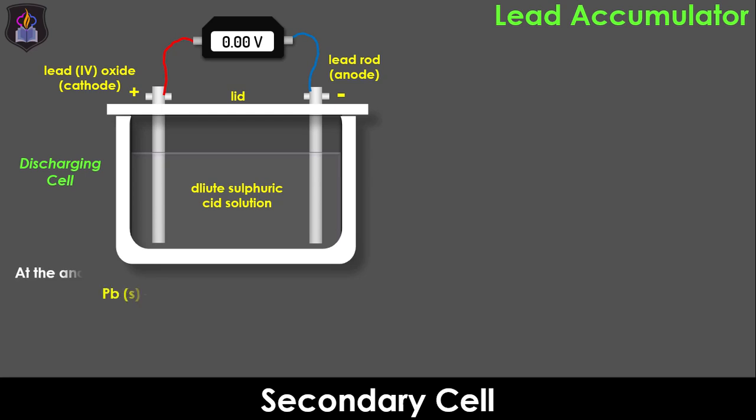During this process, the lead atoms in the anode lose two electrons each and oxidize to lead 2 ions. The electrons flow through the external circuit to the cathode, doing some work like starting a car engine, lighting the car lamps, powering the car radio, and so on. At the cathode, the lead 4 oxide and hydrogen ions from the electrolyte gain the electrons to form lead 2 ions and water.